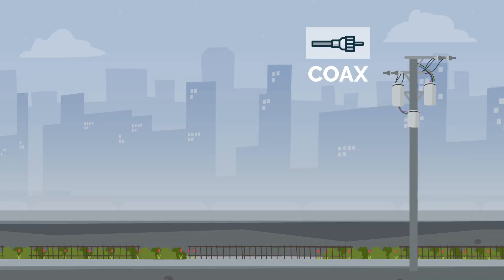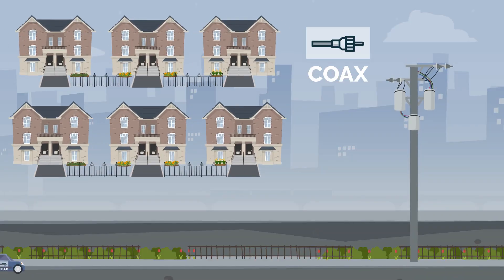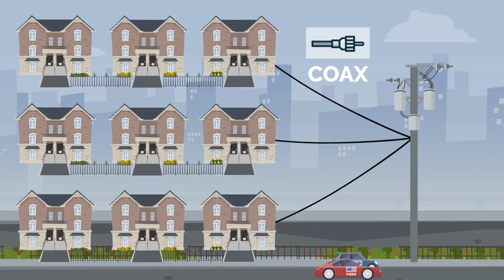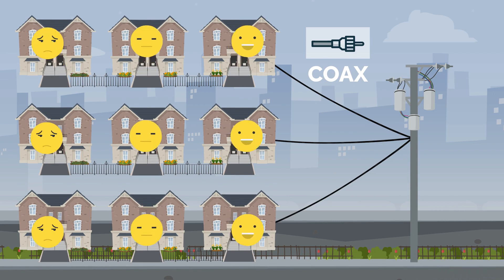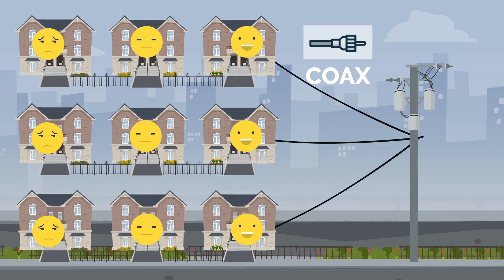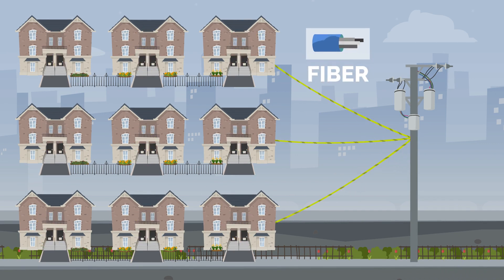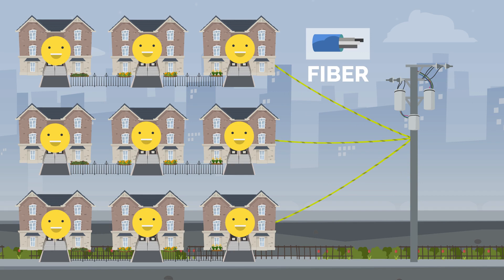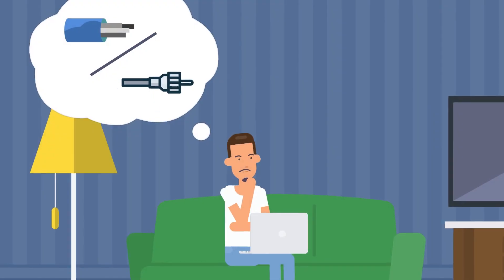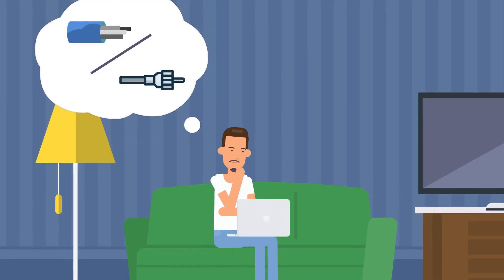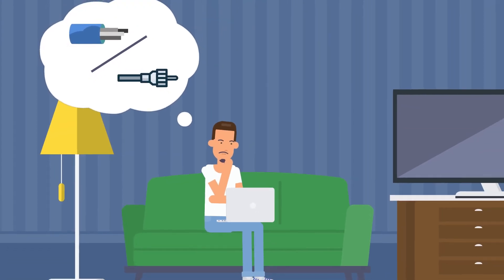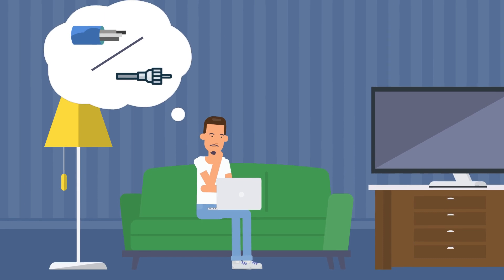With regular internet, distance and the number of connections to a node can have an impact on your speed. Fiber does not get distorted through distance like regular internet does. To learn more, visit our website at www.clickcontrol.com.